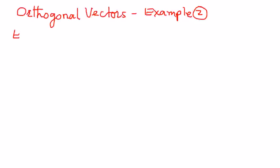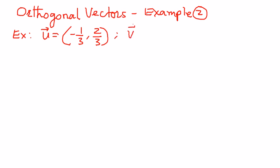In this example, if u is a vector which has components negative 1 over 3 and 2 over 3, and if v is another vector that has components 2, negative 4, we want to determine if these two vectors are perpendicular to one another, parallel to one another, or neither perpendicular nor parallel.